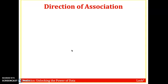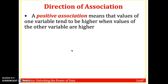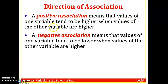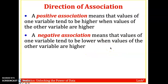We want to look at the association of two quantitative variables. A positive association means values of one variable tend to be higher when values of the other variable are higher. A negative association means values of one variable tend to be lower when values of the other are higher. Think about slope: positive association is positive slope, negative association means as x increases, y decreases.